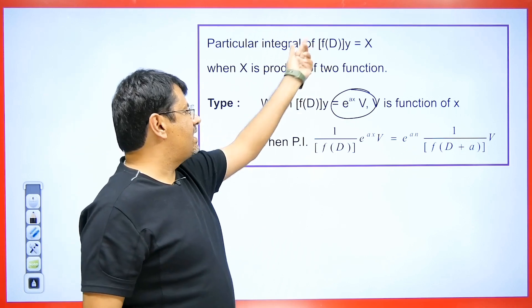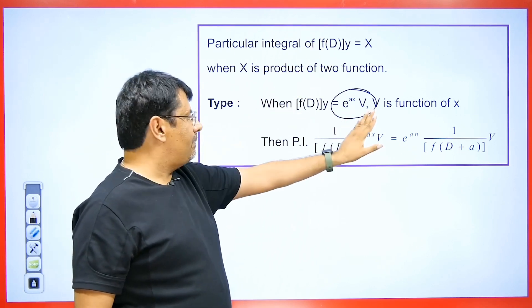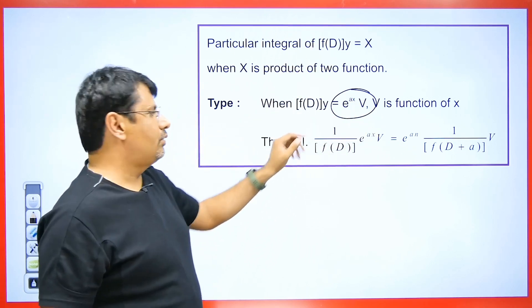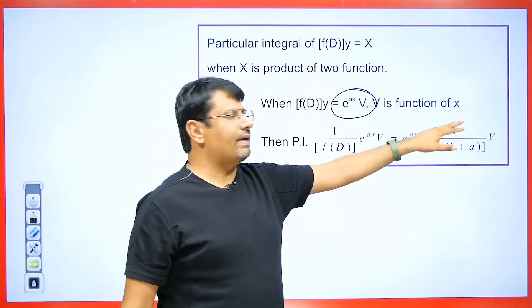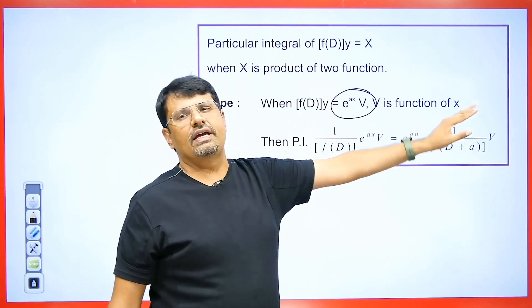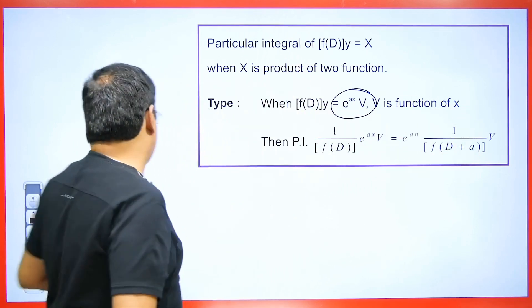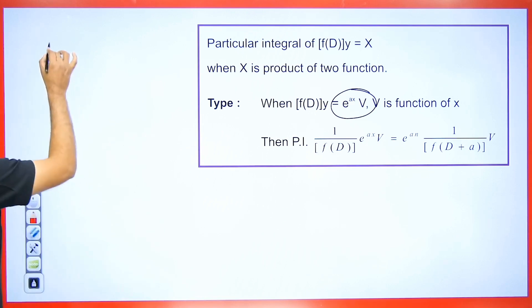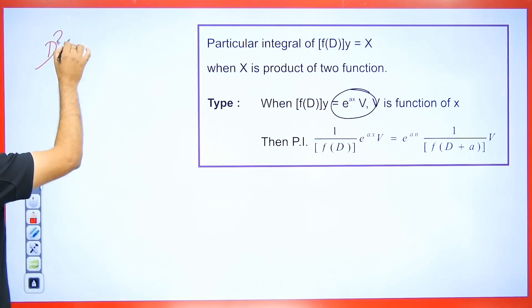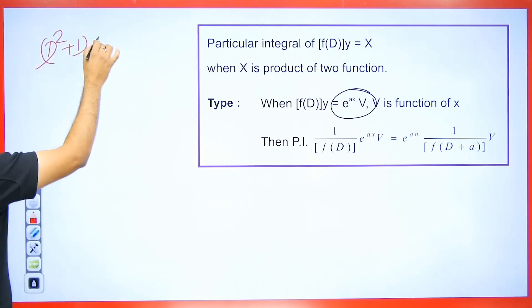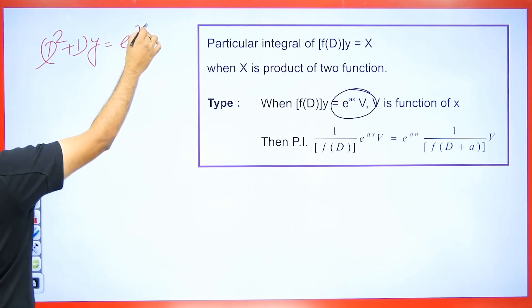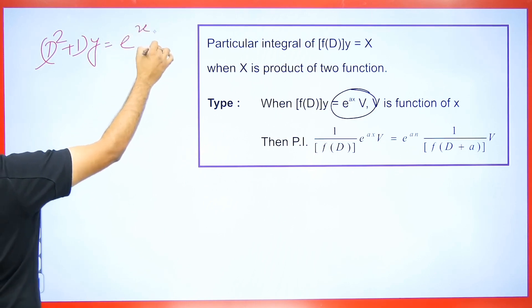Take f(D) and move it to the denominator, then place e raised to the power ax outside. Wherever there is a D, it is replaced by D plus a. For example, suppose we have a differential equation given as D squared plus 1 into y equals e to the power x into sin 2x.